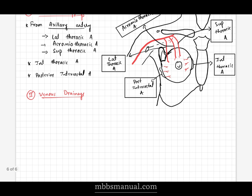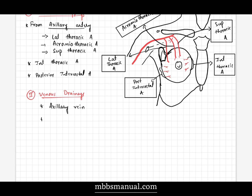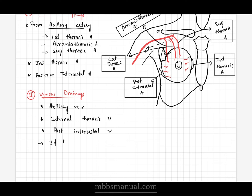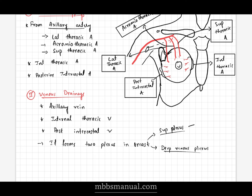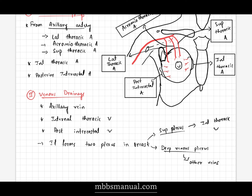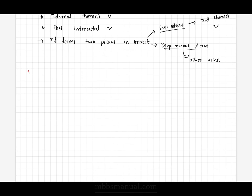Venous drainage of the mammary gland takes place by the following veins. Usually the veins follow the arteries, so it is drained by three important veins: the axillary vein, internal thoracic vein, and posterior intercostal vein. It forms two plexuses in the breast: the superficial venous plexus and the deep venous plexus. The superficial venous plexus drains into the internal thoracic vein, and the deep venous plexus drains into the axillary vein and posterior intercostal vein.